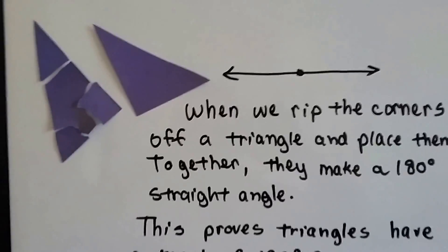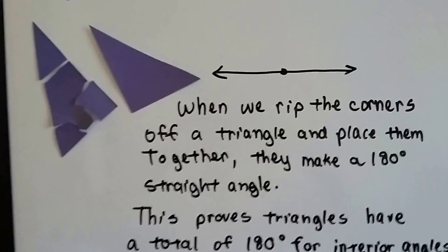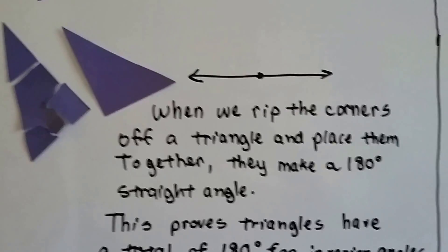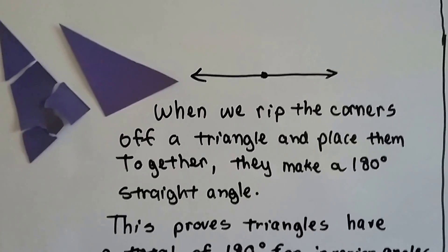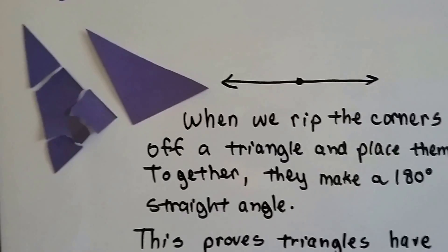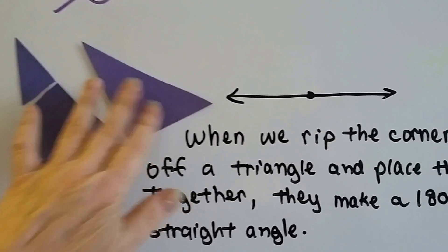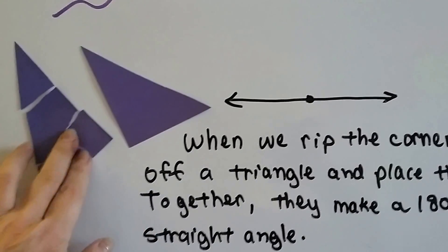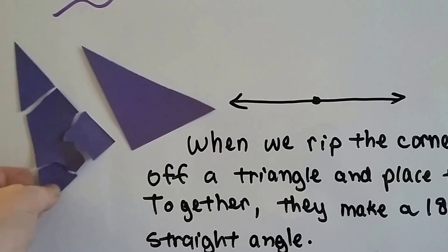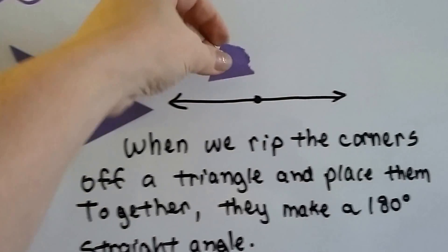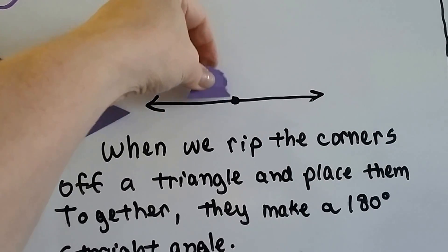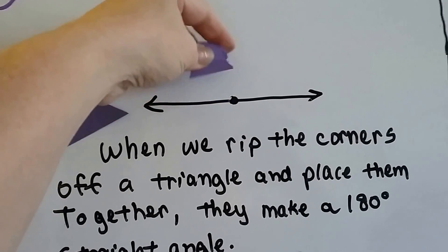Look at these paper triangles I made. When we rip the corners off of a triangle and place them together, they make a 180 degree straight angle. So here's two triangles. This one looked like this, and then I ripped the corners off. So watch what happens. If I take this and, well, let's go like this...